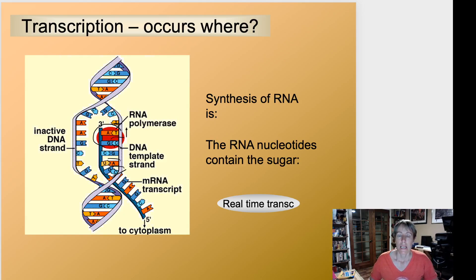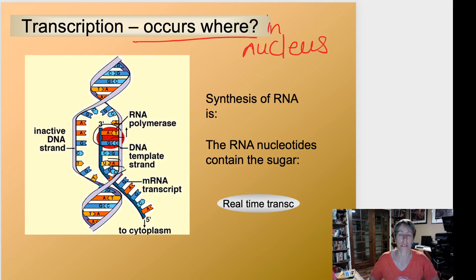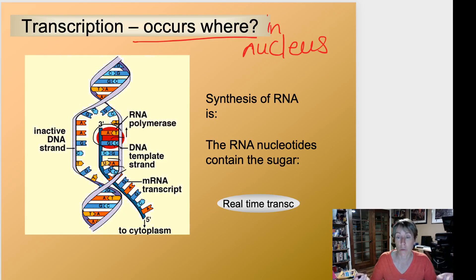So transcription is the process by which we go from DNA and copy it into a piece of mRNA. This is going to happen in the cell's nucleus, because that's where the DNA is — the DNA can't get out of there. On this diagram, the purple you see here is the DNA. You can see they've unwound a little bubble in the middle — this purple helix is the DNA strand in the nucleus, which contains 46 chromosomes, so there are 46 individual pieces of DNA.